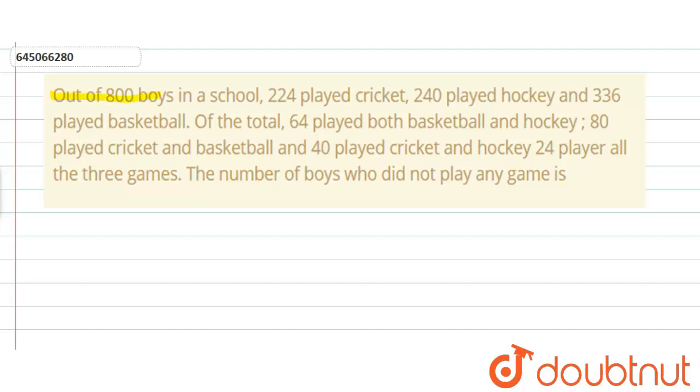The question is: Out of 800 boys in a school, 224 played cricket, 240 played hockey, and 336 played basketball. Of the total, 64 played both basketball and hockey, 80 played cricket and basketball, and 40 played cricket and hockey. 24 played all three games. The number of boys who did not play any game is?